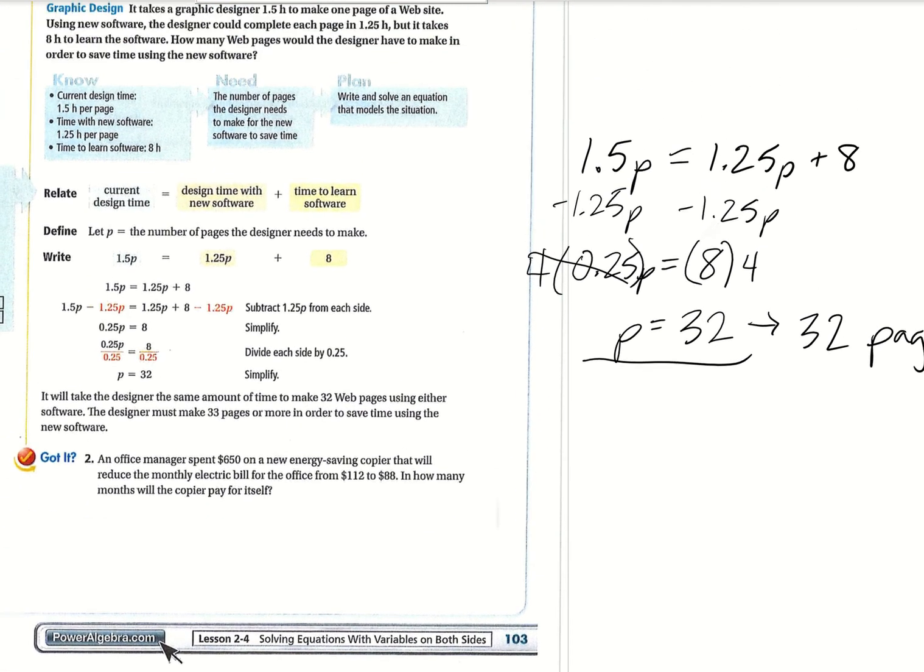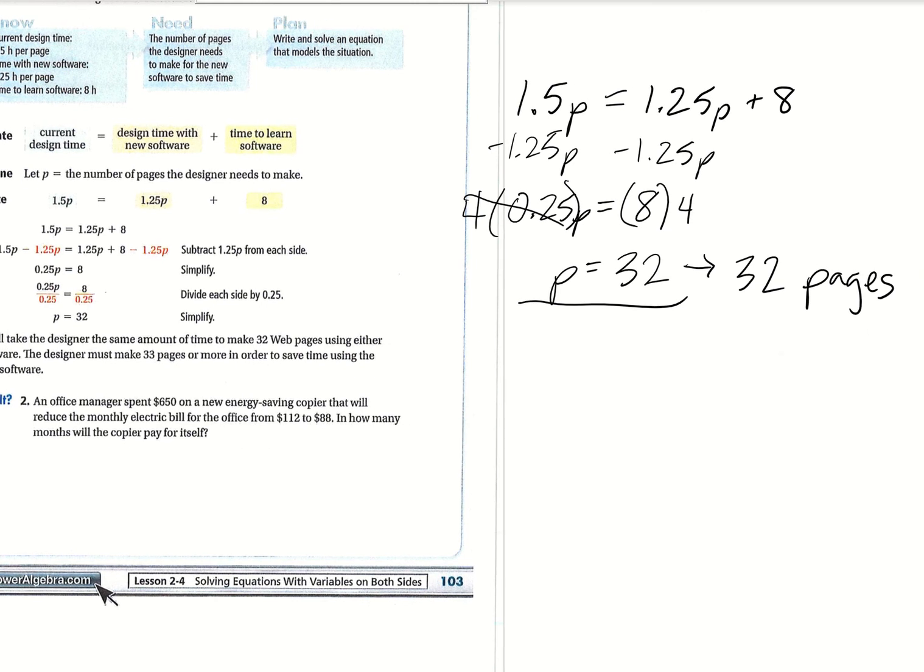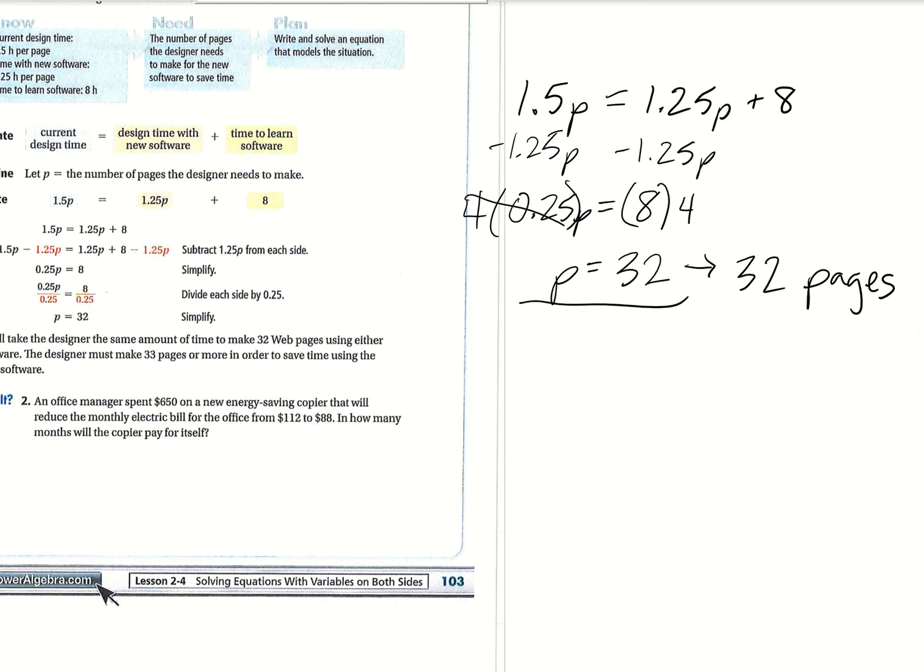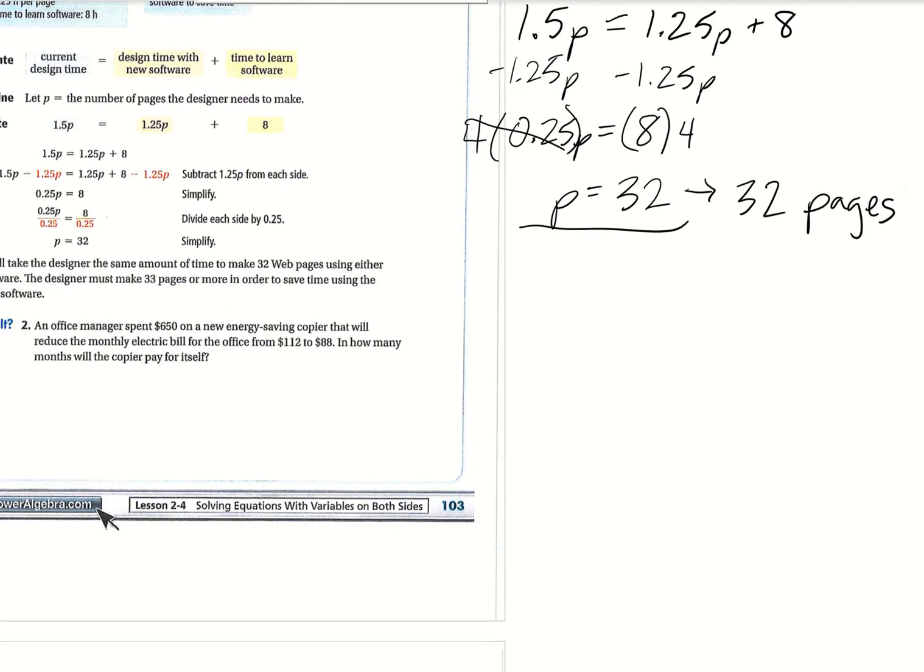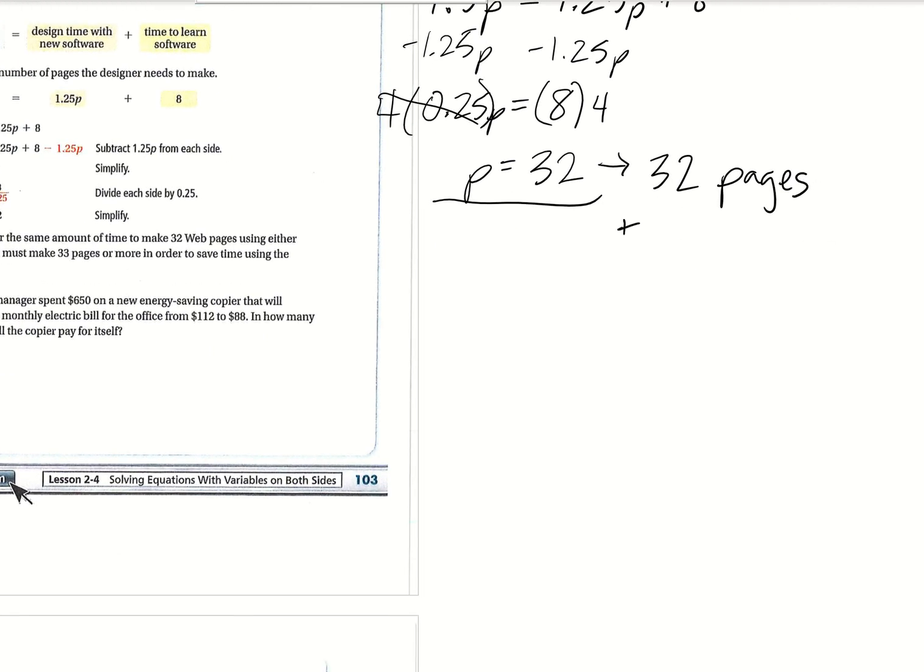The question that it asked us was how many web pages would the designer have to make in order to save time using the new software? So we're going to have to do more pages than 32 to save time, right? Because here you've saved no time. It's the same amount of time. So you need to do plus one page so that you can save time.